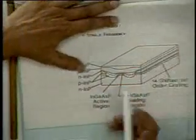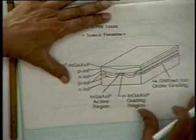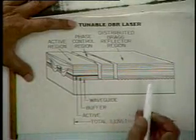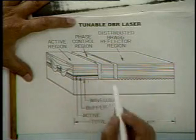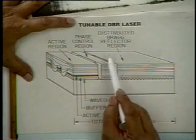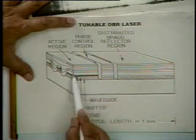This diagram shows the double channel laser — here are the two channels, this is the active region, and here you have this λ/4 shifted first-order grating. This is a bigger picture of the tunable DBR laser — distributed Bragg reflection. This is an active region; it's a double channel type of structure. The wave propagates, this is a phase control region where the phase is changed by applying an electric field, and this is the distributed Bragg reflection region — notice it is not under the active region; the active region is here, this is separate.